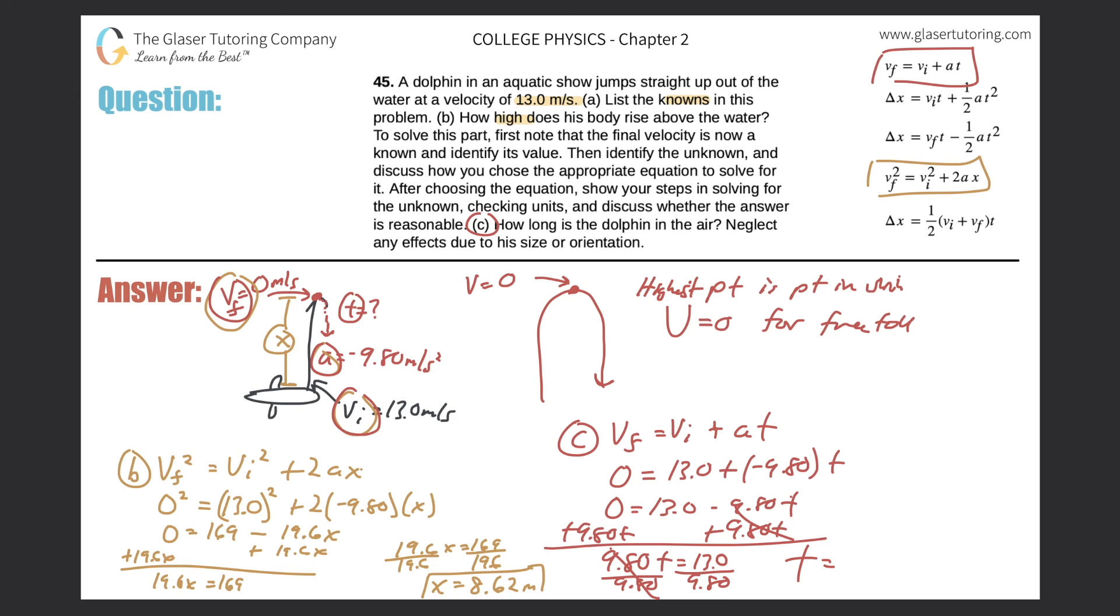And now the time then just simply becomes... So take out your calculator, do 13 divided by 9.8, and when we get the answer, we get 1.33—we're going to have three significant figures—and that's in terms of seconds. So that'll be the total time that the dolphin is in the air.